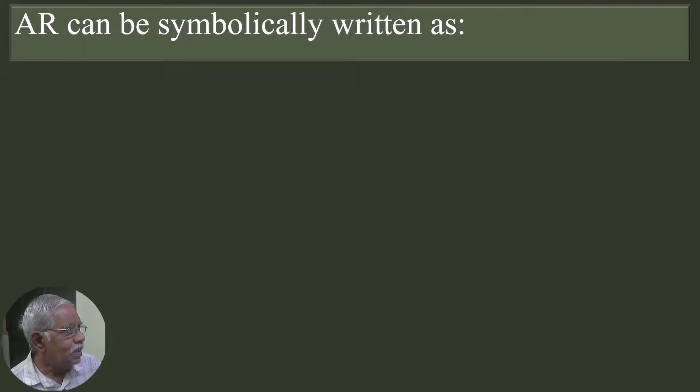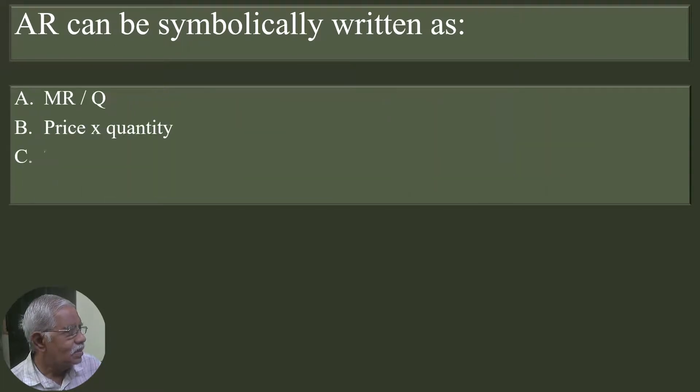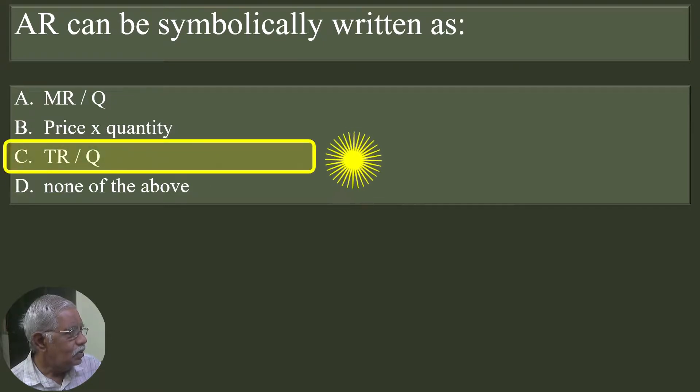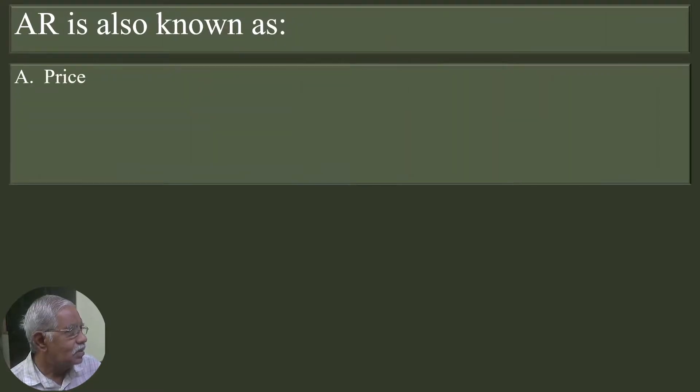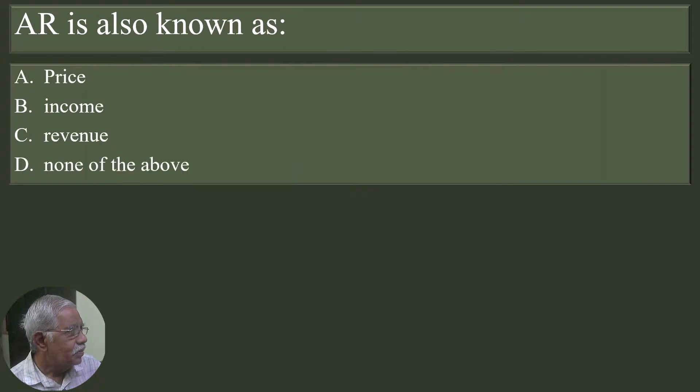AR can be symbolically written as MR by Q, price times quantity, TR by Q, none of the above. TR by Q is the correct answer.